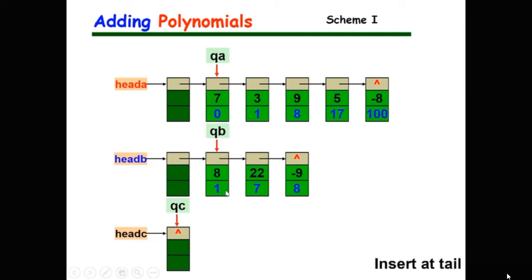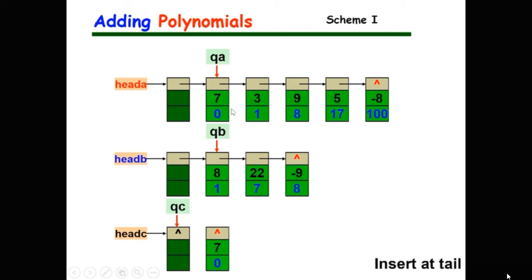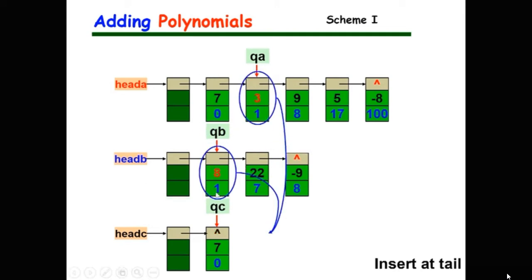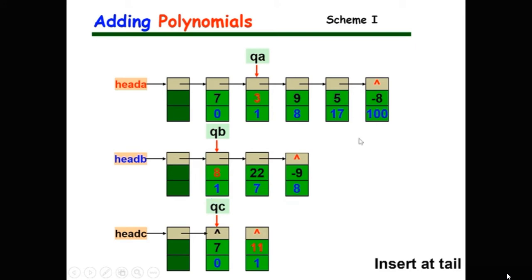Declare a pointer QC that always points to the tail of the new list; initially it points to the header. Compare the exponents of QA and QB. If QA's exponent is smaller, generate a new node, copy QA's data field, and insert it at the tail: QC's next points to the new node, then QC and QA move forward. If they have the same exponent, calculate the sum of coefficients. If the sum is not zero, generate a new node with the combined coefficient, insert at tail, and QC, QA, and QB all move forward.